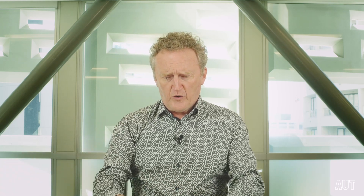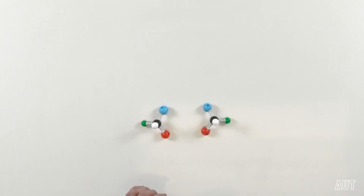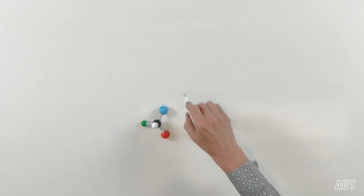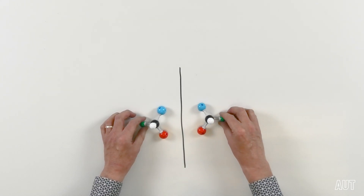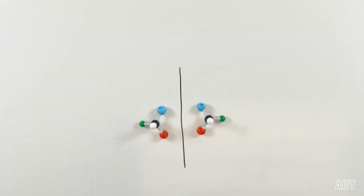Last time, you hopefully remember that we were looking at molecules that had this particular property of being non-superimposable mirror images of each other. Molecules that have such a property are called enantiomers — non-superimposable mirror images of each other.